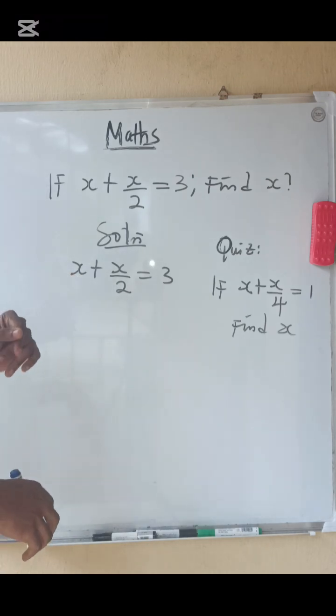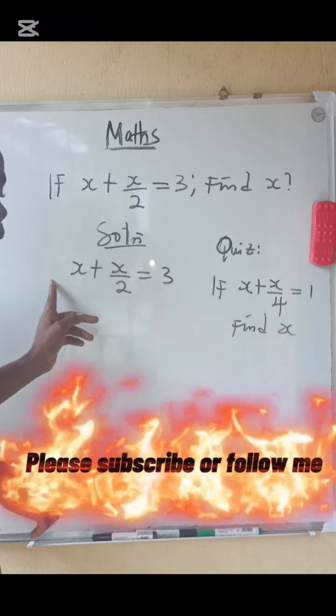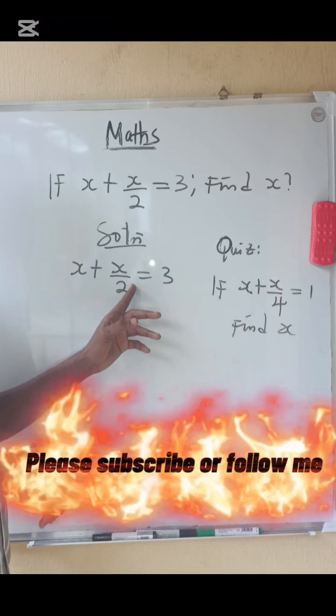So what are we going to do now? We are going to multiply 3 by 2, because if we multiply 3 by 2, the 2 is going to cancel this 2 that is here.